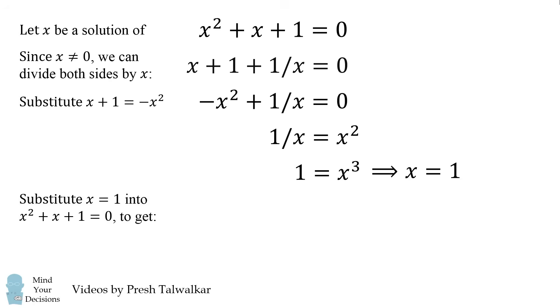We now take x = 1 and substitute it into our original equation x² + x + 1 = 0. We get 1² + 1 + 1 = 0, which means 3 = 0.